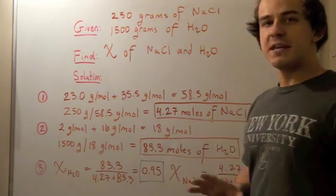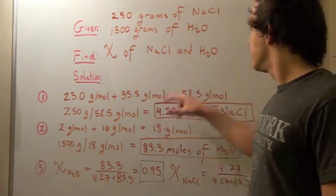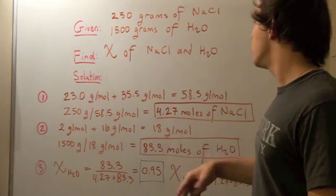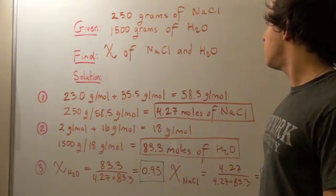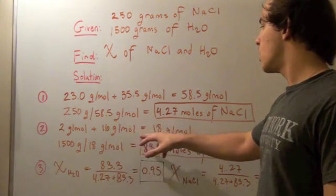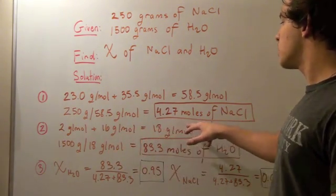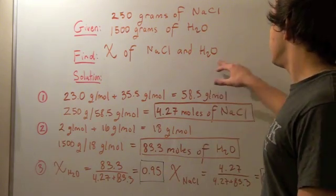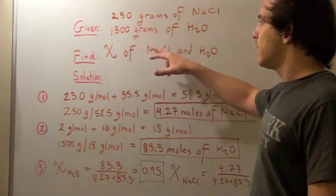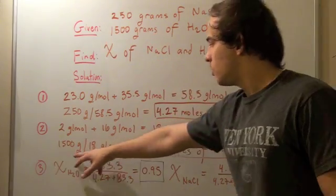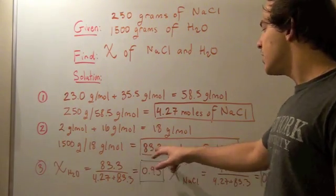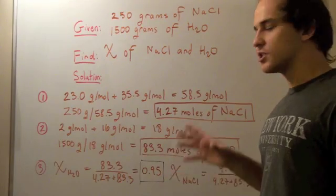Now we follow the same exact steps for water. Since there are two hydrogen atoms, we multiply 2 times the atomic weight of H, which is 1. So 2 grams per mole plus 16 grams per mole gives us 18 grams per mole — the molecular weight of water is 18 grams per mole. Next, we take the weight, 1500 grams of water, divide that by 18 grams per mole, and we get 83.3 moles of water found within the solution.